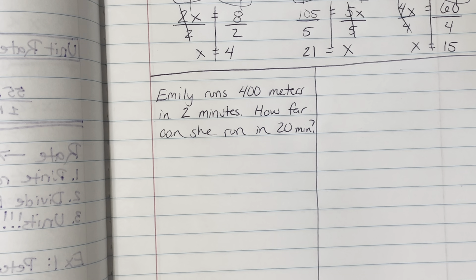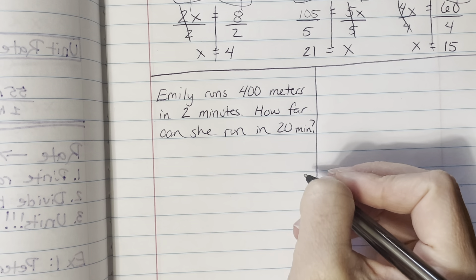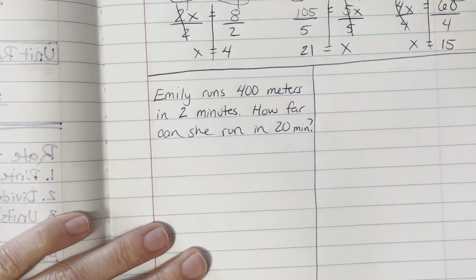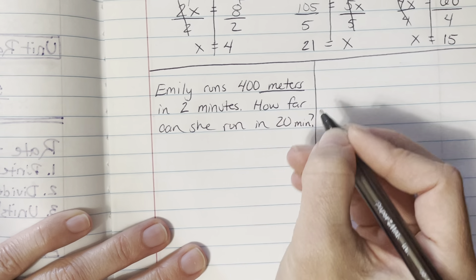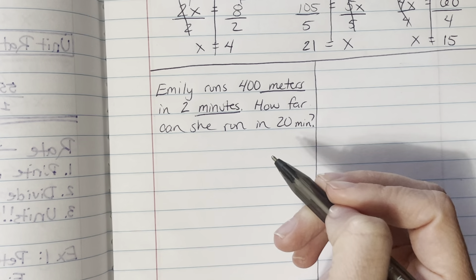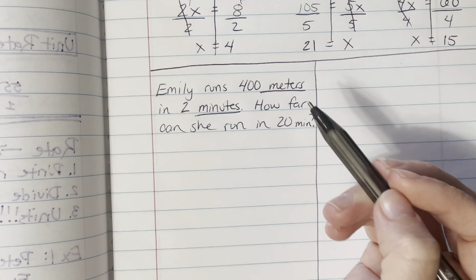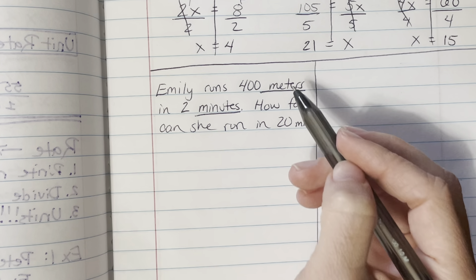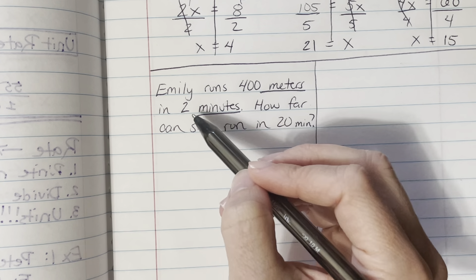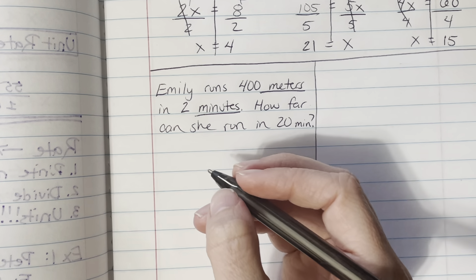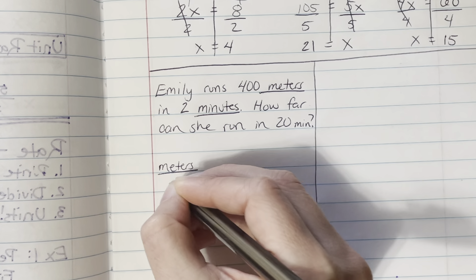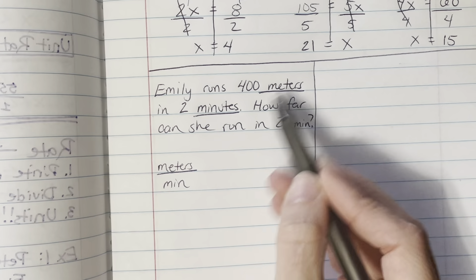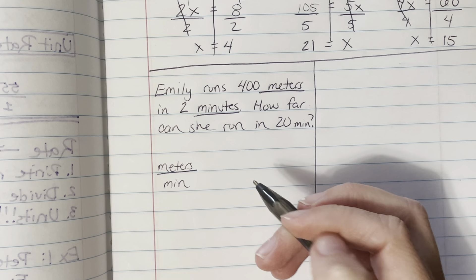Once you have that copied down, we're going to set up a proportion because we have two things we're comparing, and it will help us find the missing amount — how far she can run. The first thing to do with any word problem is ask: what are the two things you're comparing? Here we're comparing meters to minutes. Don't just pick out numbers and go — first find the words of the things you're comparing.